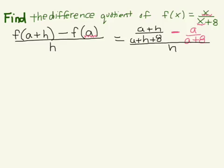In your numerator you now have two fractions, and what you have to remember is that in order to add fractions you need a common denominator. Right now your denominators are not in common. In your first term we have a plus h plus 8, and in your second term we have a plus 8. So in order to find our common denominator, we're going to multiply by the opposite denominator.